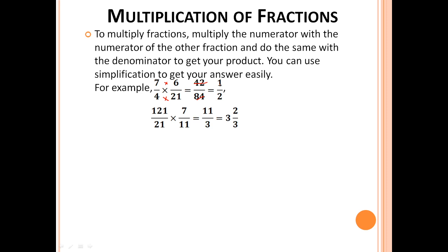But we can use a simplification method to get the answer more easily. As you can see here, we can simplify two numbers which are in the numerator and denominator — we can simplify numerator and denominator of the same fraction, and we can also simplify the numerator of one fraction and the denominator of another fraction. So 4 and 6 — numerator and denominator.